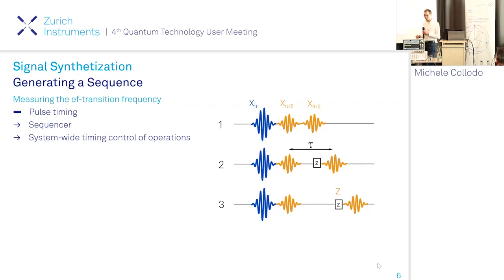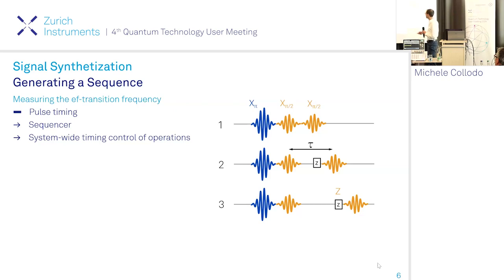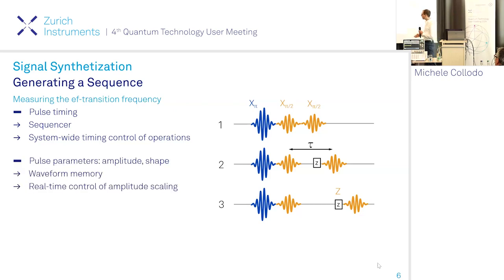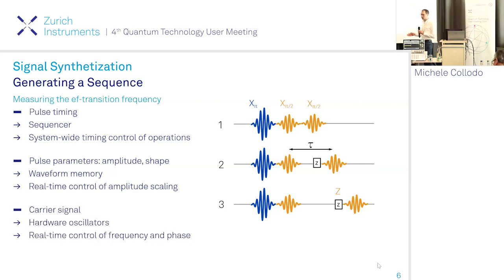Considering the digital part: to generate this example we need full control over pulse timing, realized by a sequencer responsible for system-wide timing control of the operations in the sequence. Second, we need control over pulse parameters — we can use the waveform memory for the arbitrary waveform generator to save pulses in a sample-precise way. Additionally, we have real-time control over amplitude scaling of the waveform, and the carrier signal is provided by hardware oscillators in the device, with real-time control of frequency and phase.